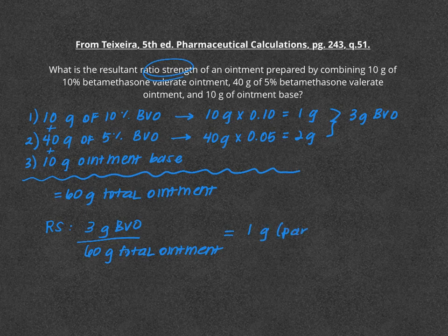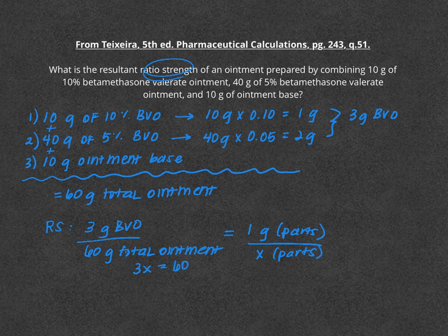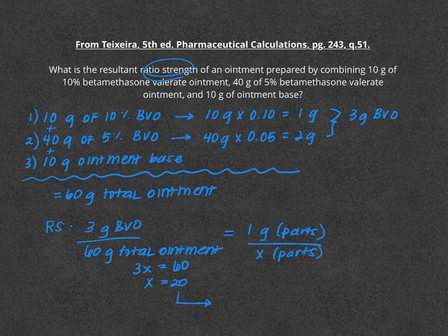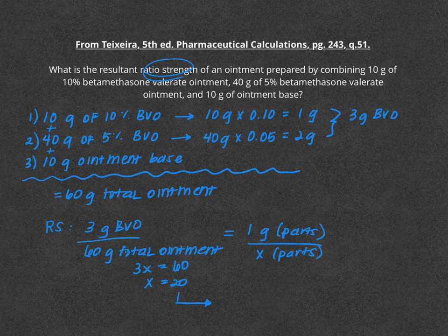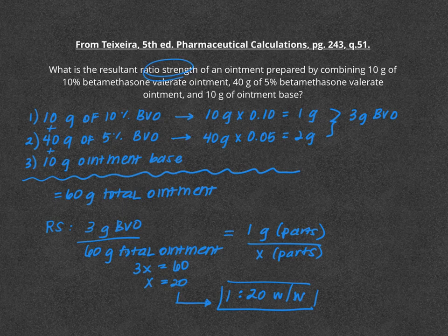We can simply cross multiply, so 3x is going to equal 60. Solving for x, that's going to be 20. So how we turn this into a ratio strength expression is then 1 part per 20 parts weight per weight. And that's it, you've done a ratio strength expression.